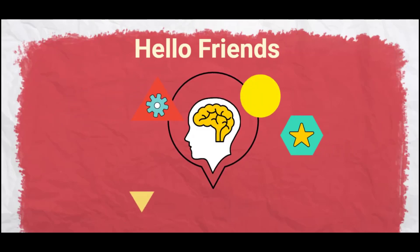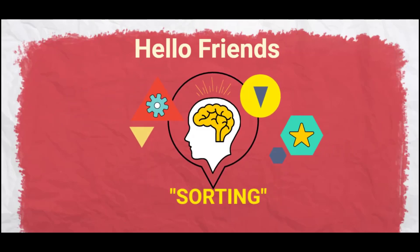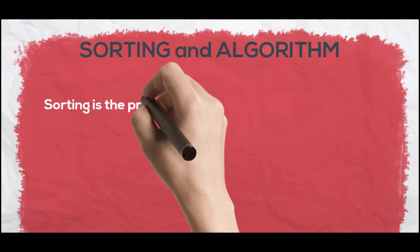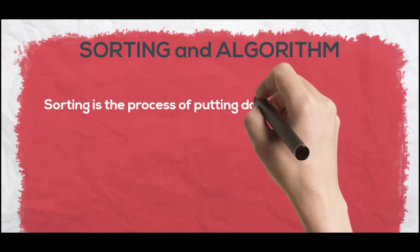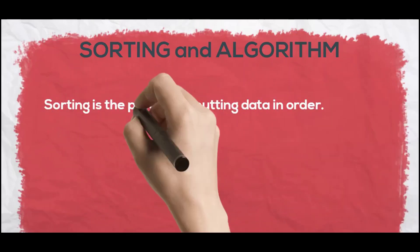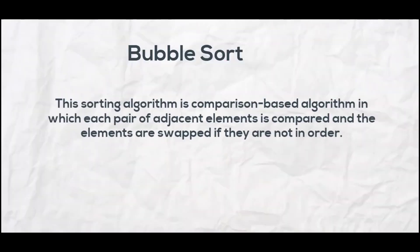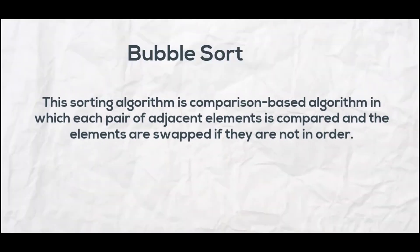In this video we are going to learn some basic sorting techniques. Sorting is the process of putting the data in an order, either numerically or alphabetically. Bubble sort is a comparison-based algorithm in which each pair of adjacent elements is compared.